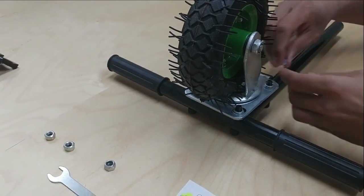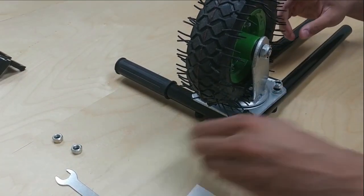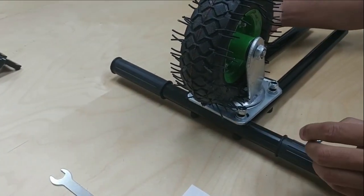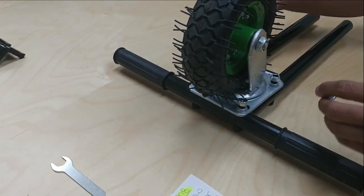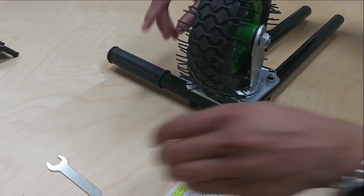And now the nuts. So just kind of line them up, maybe give them a little twirl so it's easier for you when you actually start turning them into place with the wrench.